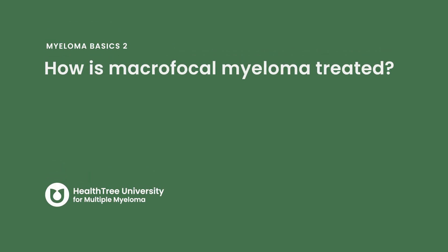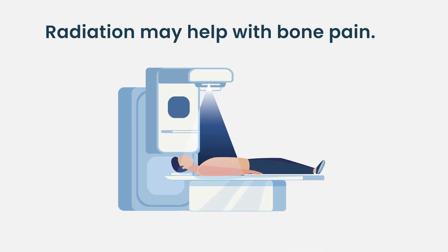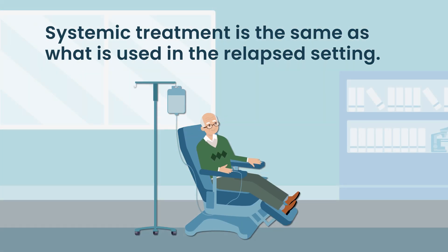In terms of treatment, in relapse you try different things, as you would for any relapsed disease. If it's causing a lot of symptoms at diagnosis or in relapse, then radiation might be indicated. If radiation is not indicated, then you use systemic treatment, which follows the same paradigm used for any relapsed myeloma.